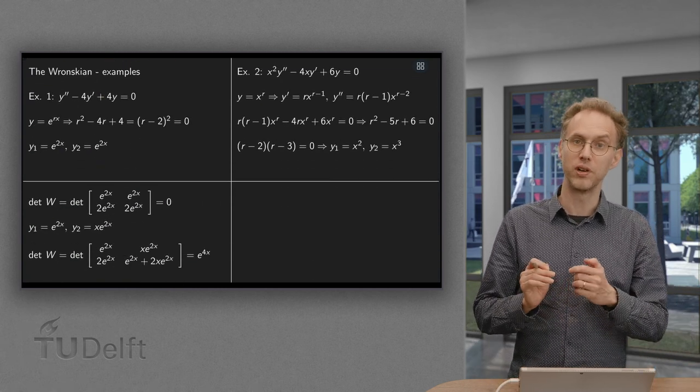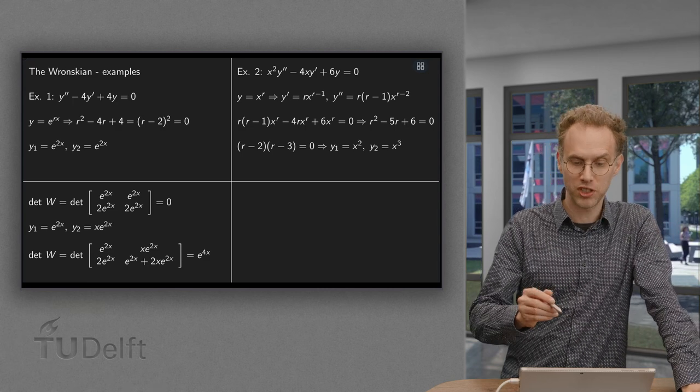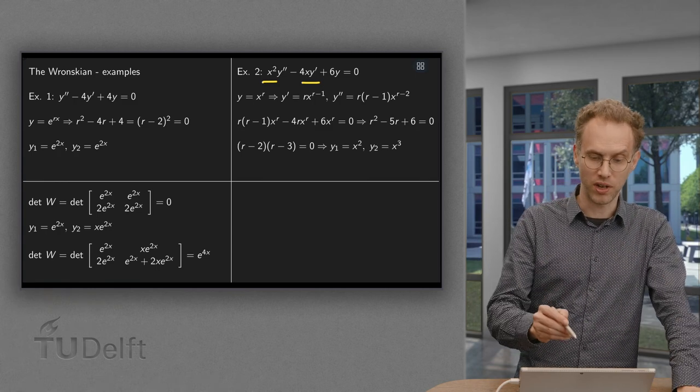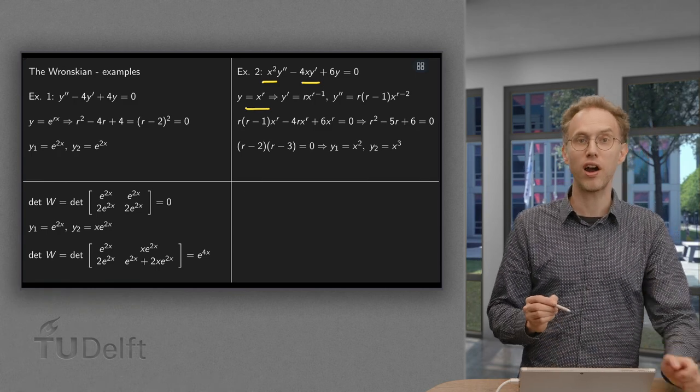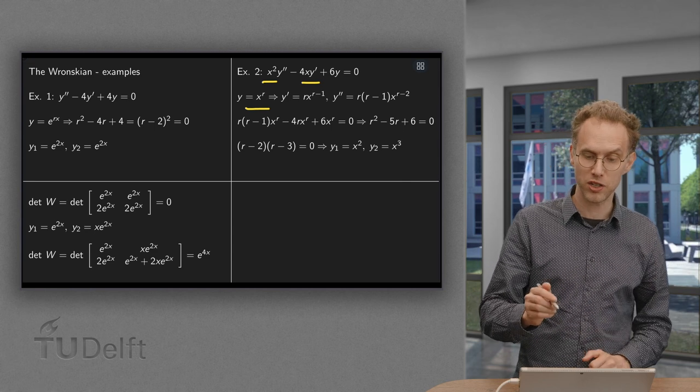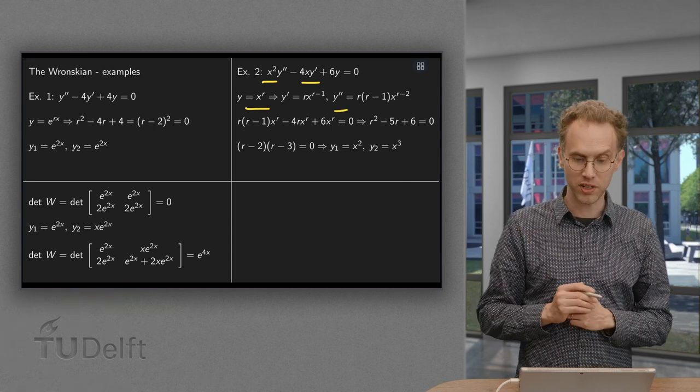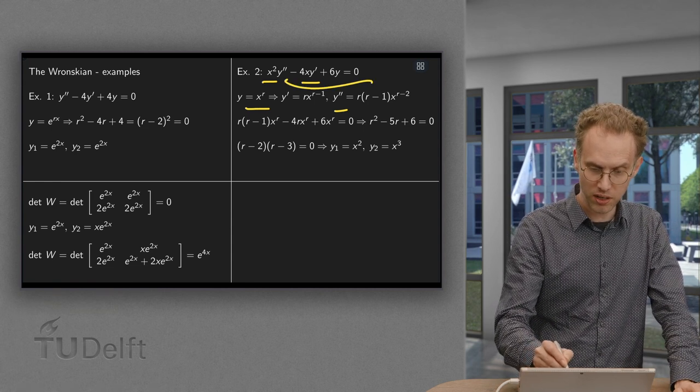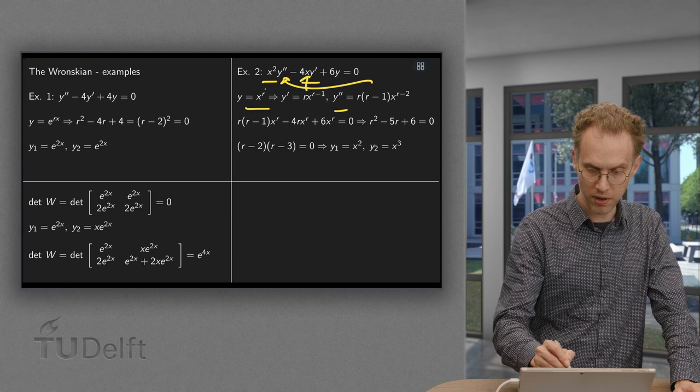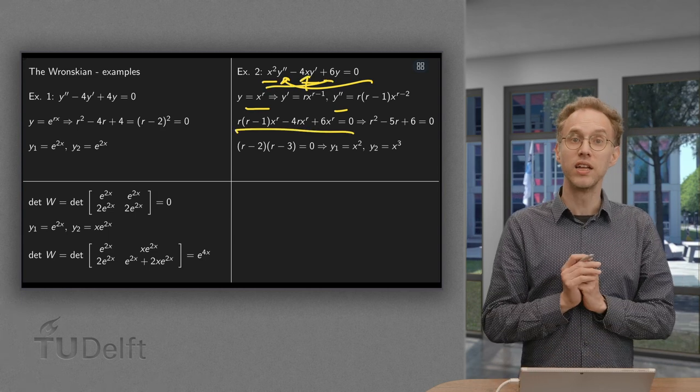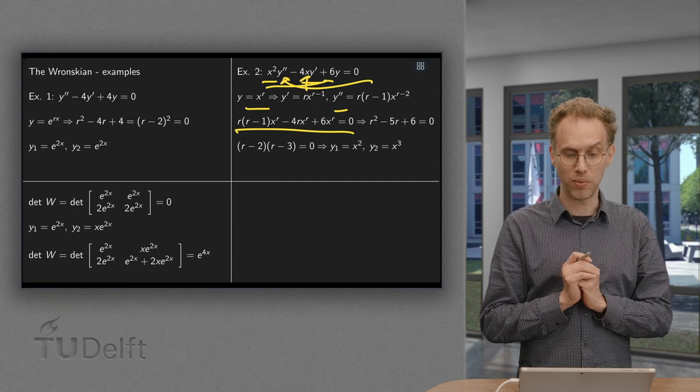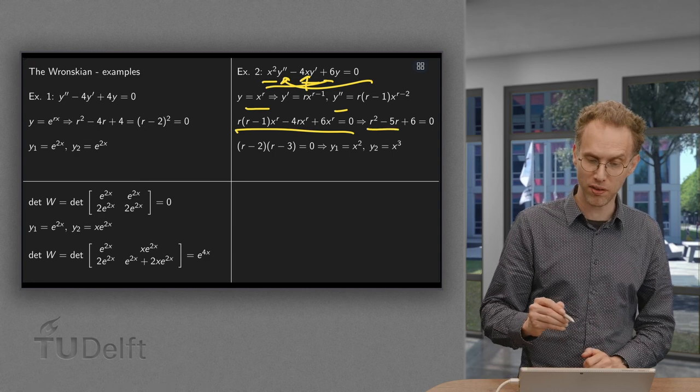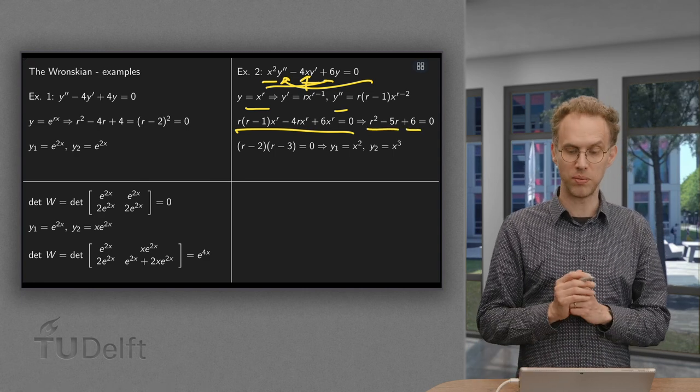And the final example, which is a so-called Euler equation, which is slightly more tricky because there are some x's here. We can, as an ansatz, put y = x^r, and y' becomes rx^(r-1), and y'' equals r(r-1)x^(r-2). Plug all of that into the equation and we end up with this over here. You can divide by x^r so you are left with r² - r - 4r = r² - 5r + 6 which has to be equal to zero.